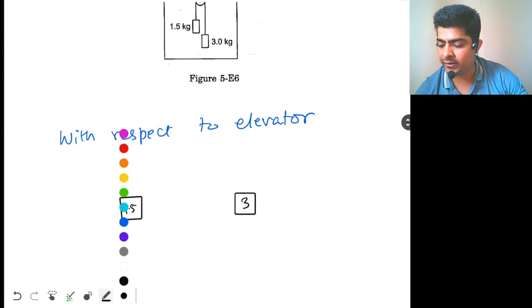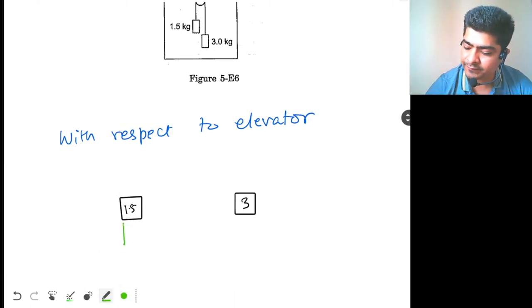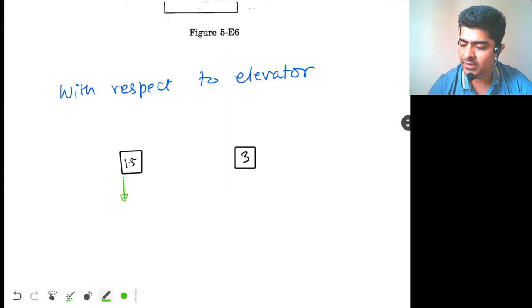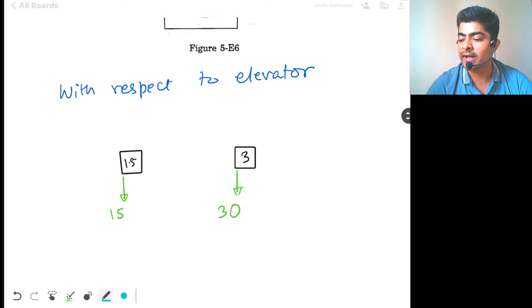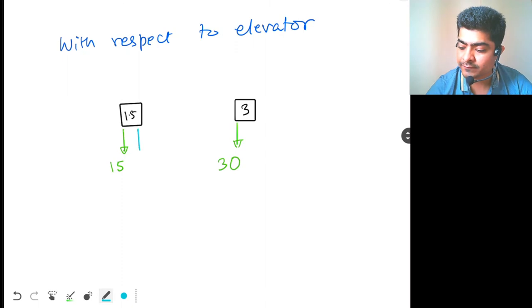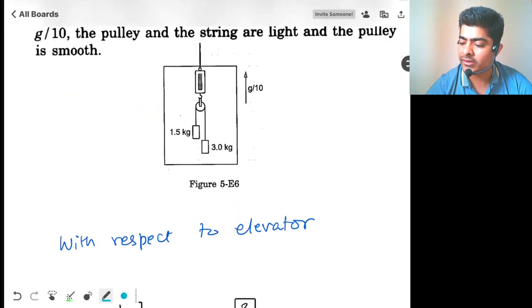What are the forces acting over here? First of all, we have mg. So, here the mg will be how much? 1.5 into take g equal to 10. Not given in the question. So, let's take g equal to 10. So, 1.5 into 10 will be 15. Over here, gravity will be how much? 3 into 10, that will be 30. Then we have pseudo force. The elevator is going upward. So, pseudo force will act downwards.